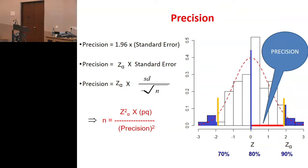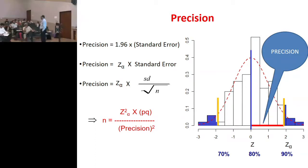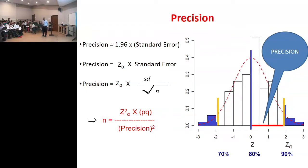When I talk to you and you say you would like to have 90% sensitivity, then I ask how precisely you want to do it. You say 10% on either side. So your precision is 10%, meaning plus two standard errors or minus two standard errors. That is how you need to phrase it.